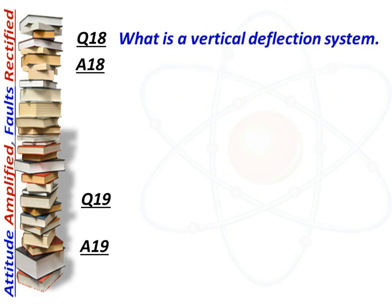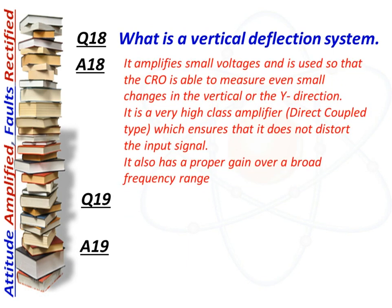Next question: what is a vertical deflection system? Answer: It amplifies small voltages so that the CRO is able to measure even small changes in the vertical signal. It is a very high-class amplifier which ensures that it does not distort the input signal.